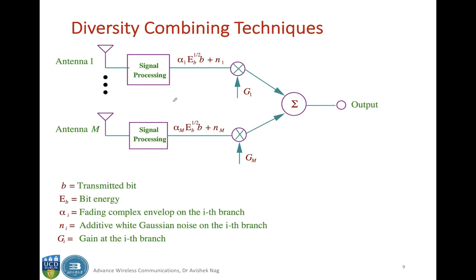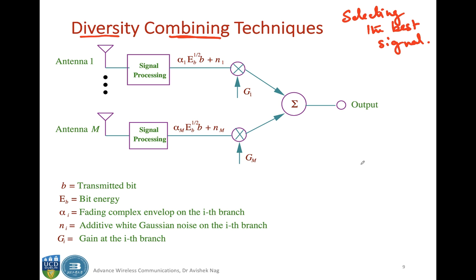Selecting the best signal is one way of achieving diversity, but a more general way is combining. With multiple antennas — antenna 1 through M — and after some signal processing, you have values called alpha_i, which represent the complex fading envelope accounting for both the attenuation and phase change due to multipath. These go from alpha 1 to alpha M.